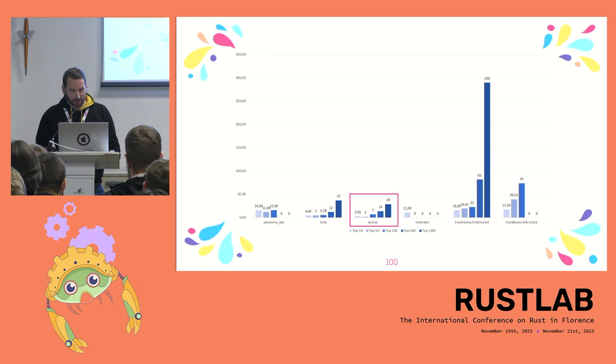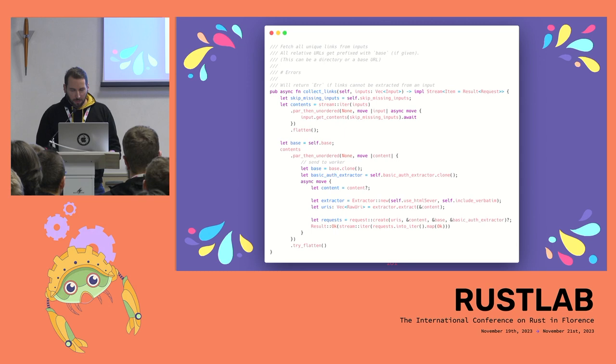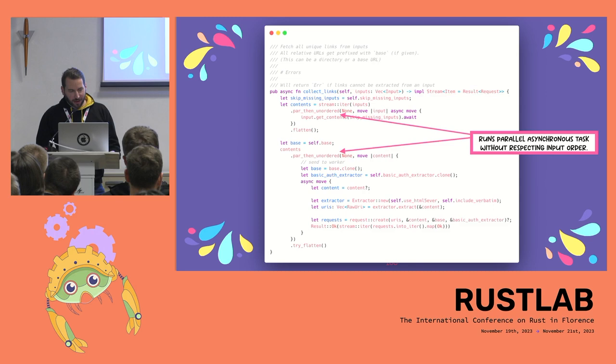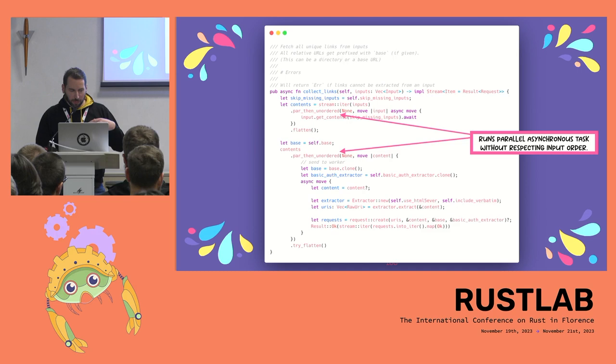In Rust you can use streams — and the core of Lychee is stream-based. This is the part that collects links and returns them as a stream. You can see two blocks that run concurrently: you fetch contents from all inputs concurrently, then go over all extracted contents and try to extract links from there, putting them into a pipeline for Lychee to check.